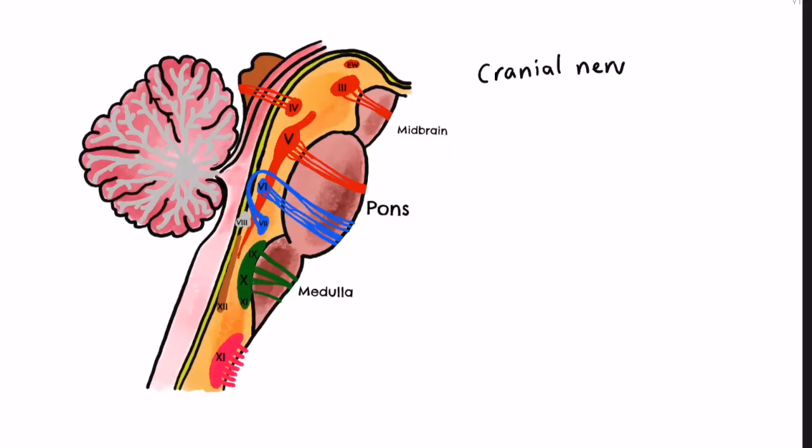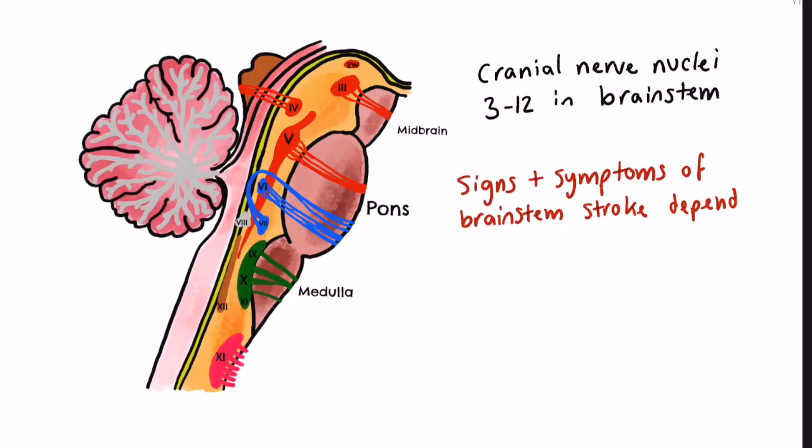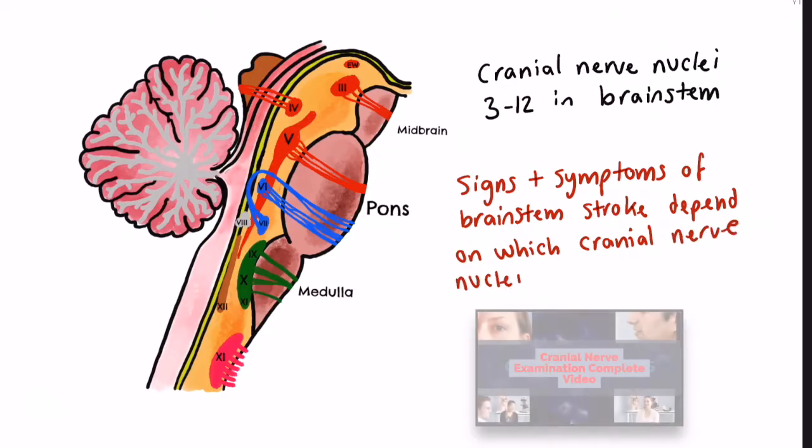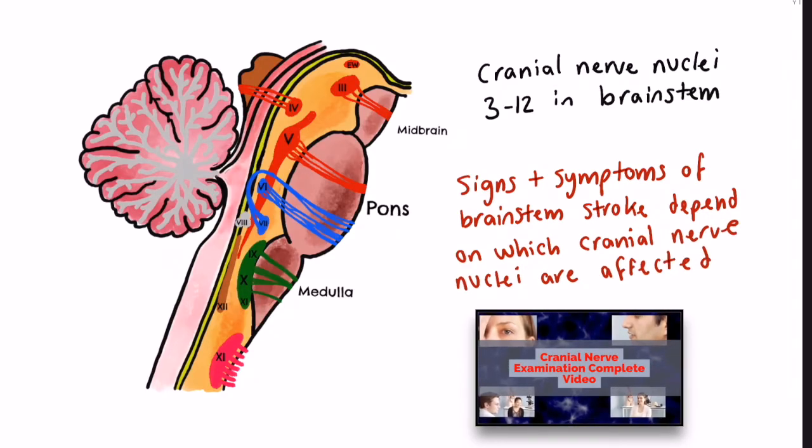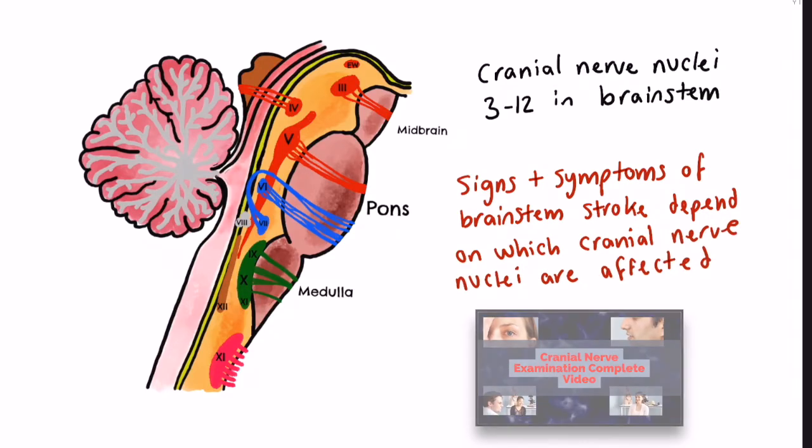Many of the nuclei of the 12 pairs of cranial nerves also lie in the brainstem. Signs and symptoms will depend on which cranial nerves are affected. If you are unsure of the functions of the cranial nerves, I suggest you watch this video to recap.